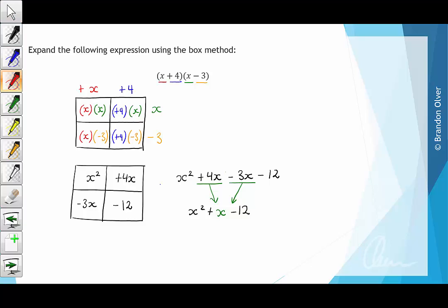And remember that the x has come from 4 minus 3 times x when we simplify the like terms. So that's the full expansion of the set of brackets.